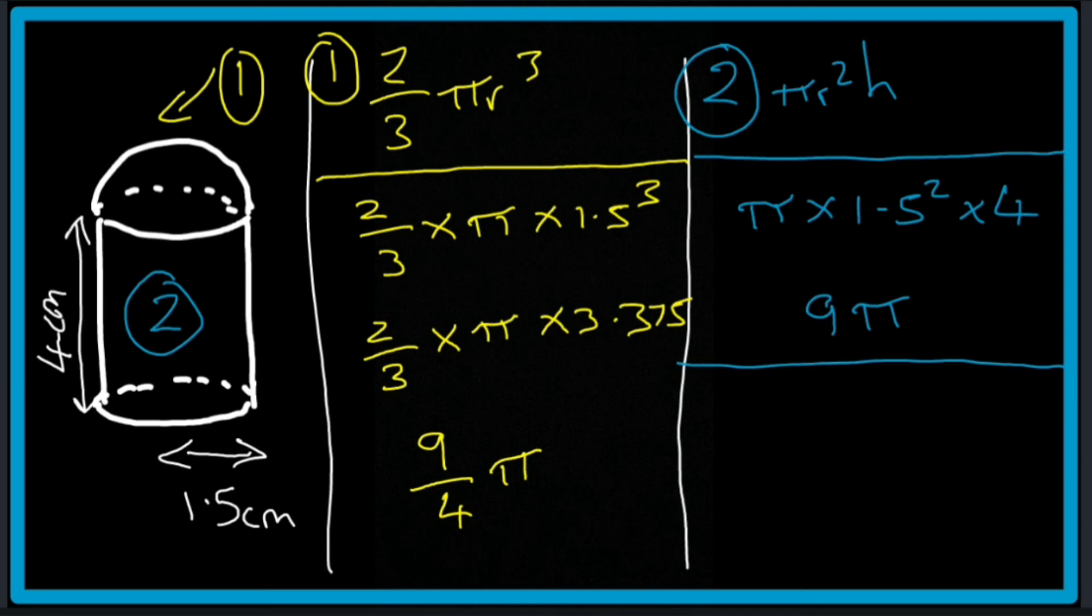Now to get the overall volume we just need to add them both together. So that's 9 over 4 pi from here plus the 9 pi from this part here which gives us 45 over 4 pi.